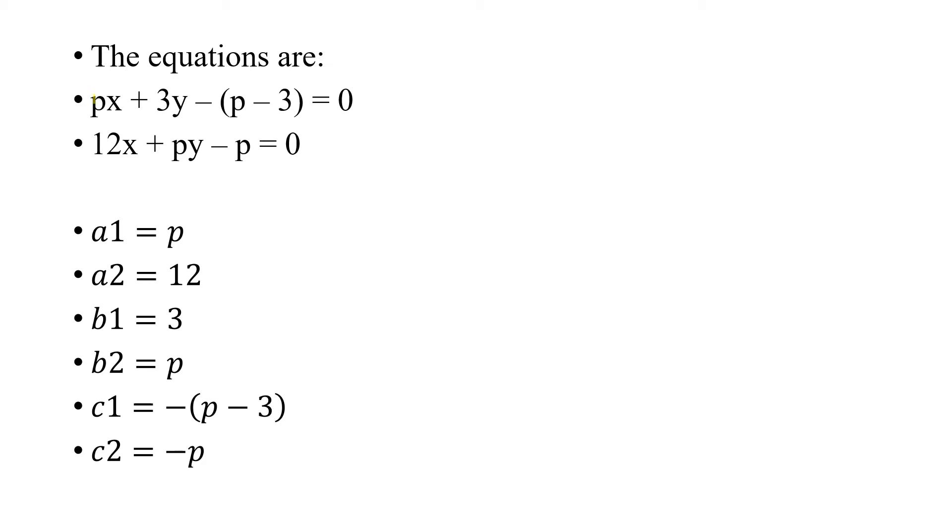The equations are px + 3y - (p - 3) = 0 and 12x + py - p = 0. From this we are going to assign the values of a1, b1, c1 and all. We get a1 = p, a2 = 12, b1 = 3, b2 = p, c1 = -(p - 3), and c2 = -p.